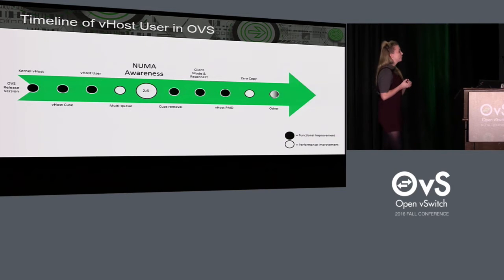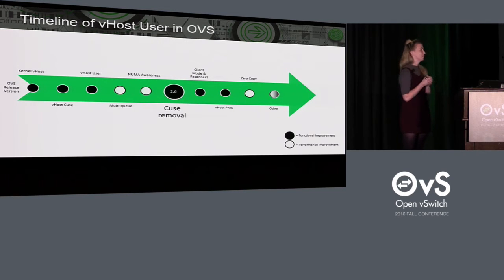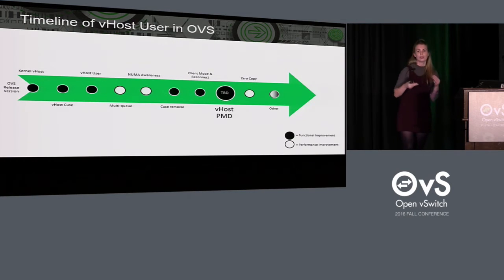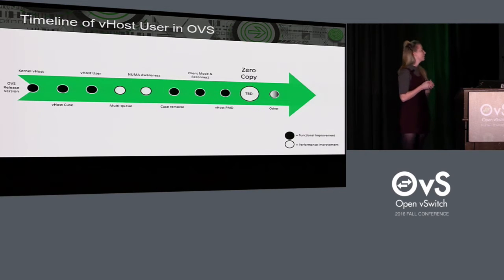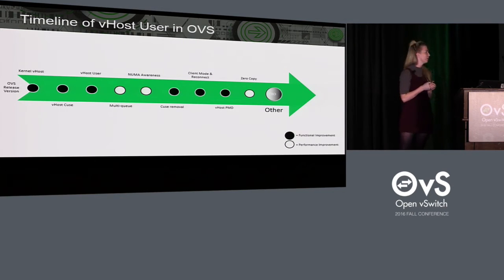In the current release, version 2.6, we added NUMA awareness. We also removed vhost queues because, partly, we were adding all these new features for vhost user that vhost queues didn't have, so it eventually got deprecated. Also in 2.6, we added client mode. After that, we're in post-2.6 territory with potential future improvements like the vhost PMD and zero copy. That gives you a high level sequence of events about vhost user in Open vSwitch.